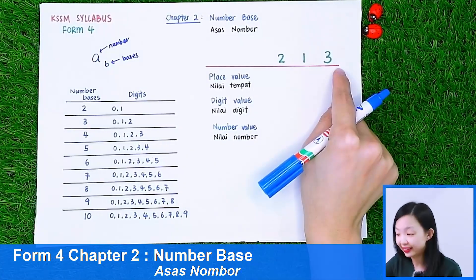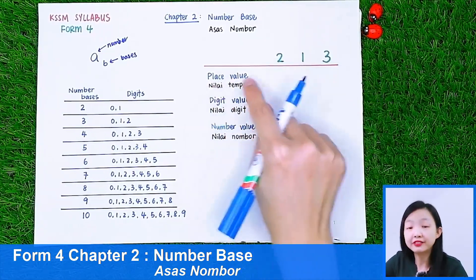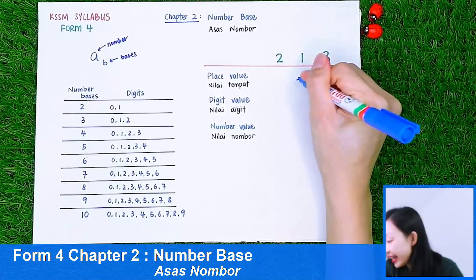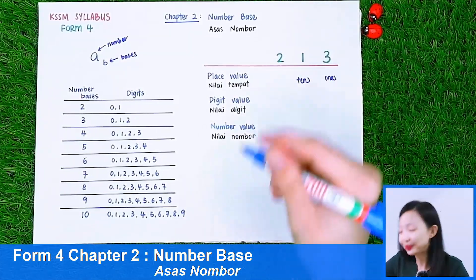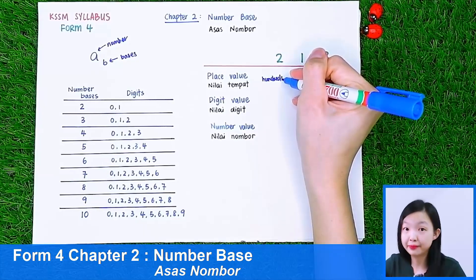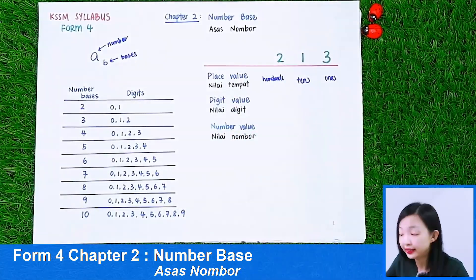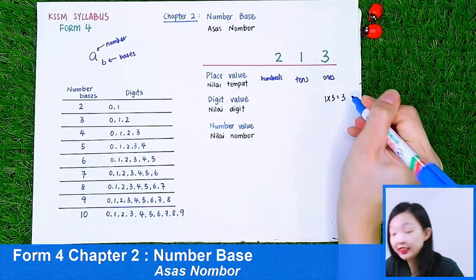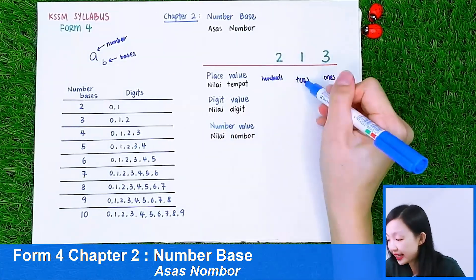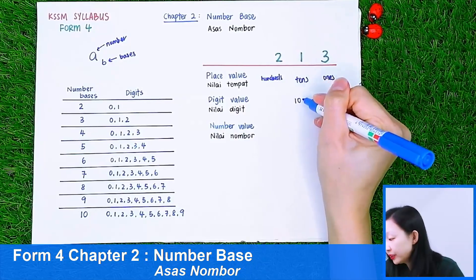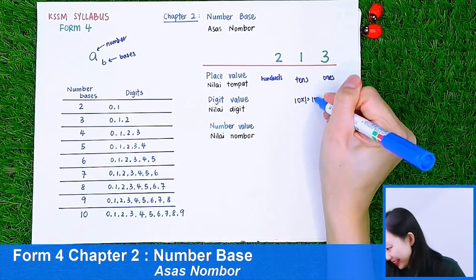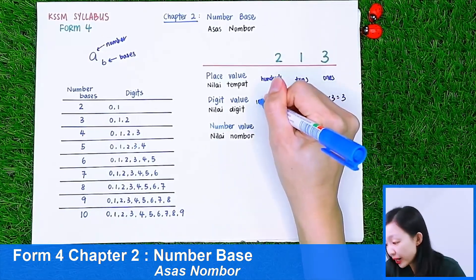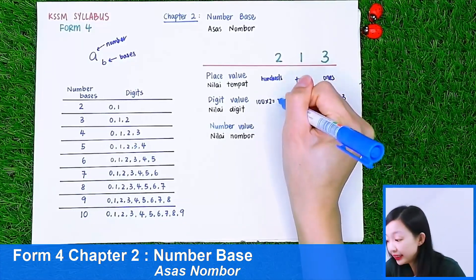For 213, we know that the place value of this 3 is 1. And the place value for this 1 is 10. And the place value for this 2 is 100. This is what we learned from primary. How about the digit value? The digit value for this 3 — since the place value is 1 — so we will do 1 times 3. The digit value is 3. For this 1, the place value is 10, so we do 10 times 1, giving digit value 10. And for this 2, the place value is 100, so 100 times 2 gives digit value 200.